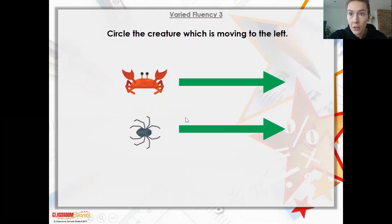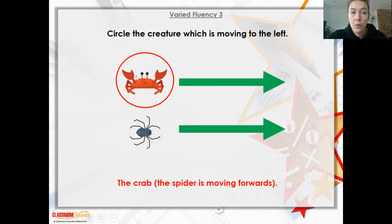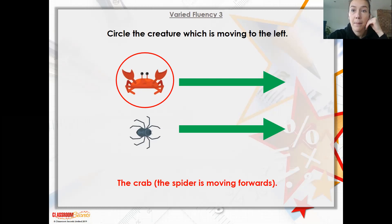We've got a crab and a spider. Circle the creature which is moving to the left. The spider is obviously facing forwards and he's moving forwards. However, the crab is moving to the left because of the way he is positioned.